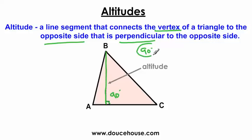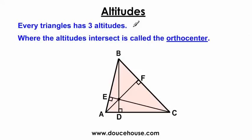It's really important that you understand that an altitude makes a 90-degree angle. And so if we have three vertices and we've got three sides, then we're going to have three altitudes. Now this is going to be mainly for acute triangles. Every triangle has three altitudes, but for acute triangles it's always going to intersect on the inside of the triangle. So keep in mind, I'm mainly talking about acute triangles here.